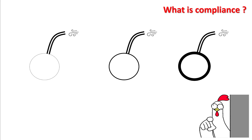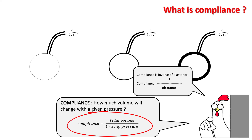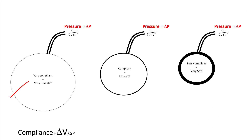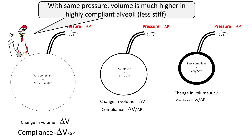Compliance is nothing but the inverse of elastance, defined as change in tidal volume divided by driving pressure — that is, how much volume will change with a given pressure. If we take three alveoli, the left one is very compliant and the rightmost is least compliant. When you give them a pressure delta P, the very compliant alveolus gets most of the air while the least compliant gets the least.